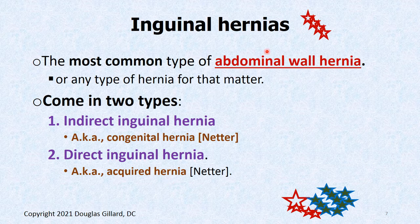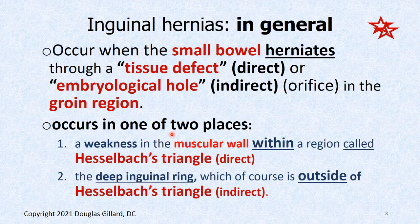Inguinal hernias are the most common of all abdominal wall hernias. Of all hernias — Spigelian, umbilical, and others — inguinal hernias are the most common. If you're going to have a hernia, it's probably going to be an indirect inguinal hernia, male or female. It occurs when small bowel gets sucked down into an embryological defect that passes through the inguinal canal.